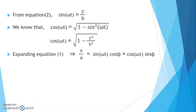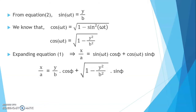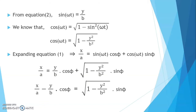Expanding equation 1, we get x/A equals to sin(ωt)·cos(φ) + cos(ωt)·sin(φ). Substituting the values of sin(ωt) and cos(ωt), we get x/A equals to (y/B)·cos(φ) + √(1 − y²/B²)·sin(φ), which implies x/A − (y/B)·cos(φ) equals to √(1 − y²/B²)·sin(φ).